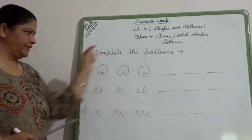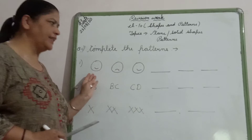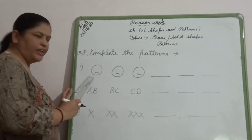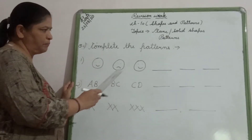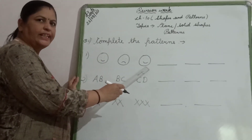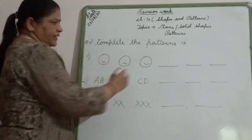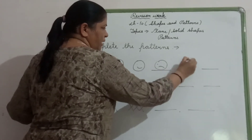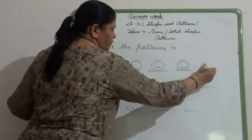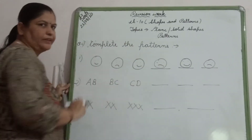Now we come to question number 4: Complete the patterns. Some patterns have been given to you. You have to complete by seeing the previous pattern. The first smiley is happy, next smiley is unhappy, then third smiley is again happy. So what smiley will you make? You will make the smiley of unhappy, then happy, and then unhappy. In this way you have to complete the pattern.